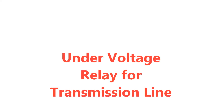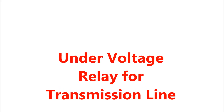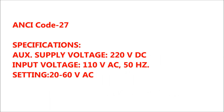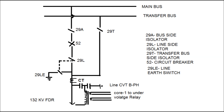The under voltage relay for a transmission line is represented as ANSI code 27. Generally, the auxiliary supply voltage is of the order of 220 volt DC, and the input voltage for the coil is 110 volt AC at 50 Hz frequency. The settings range is 20 to 60 volt AC.